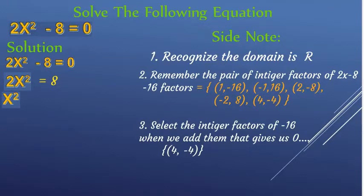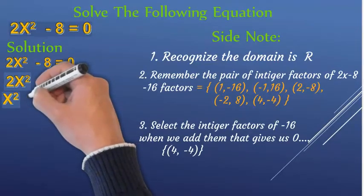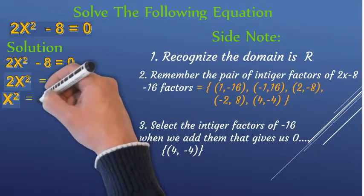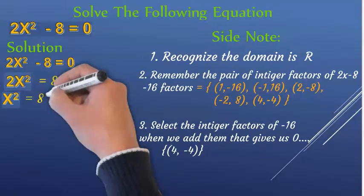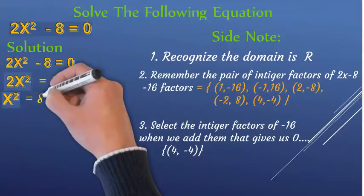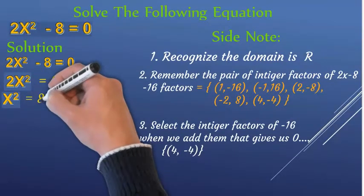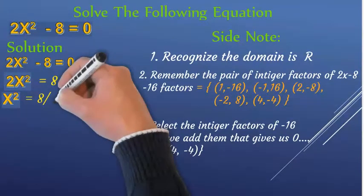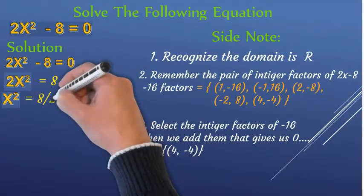x squared is equal to 8 over 2, which is 4. So x squared is equal to 4.